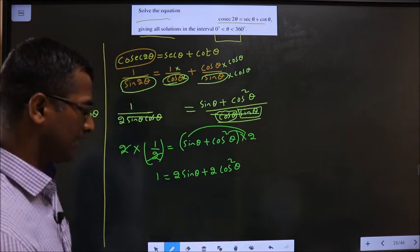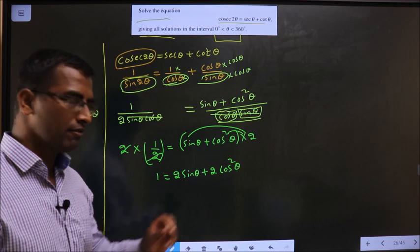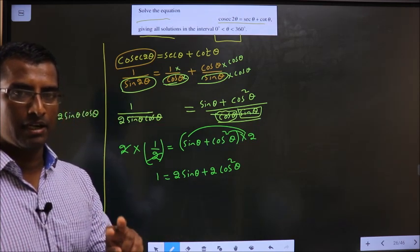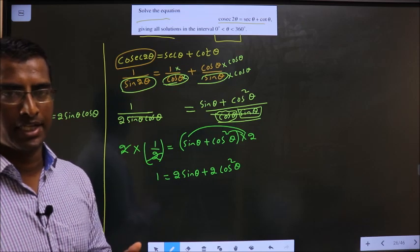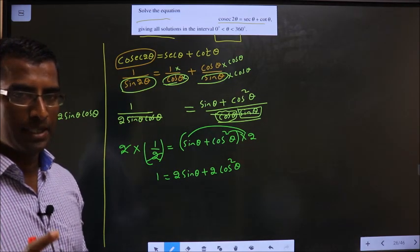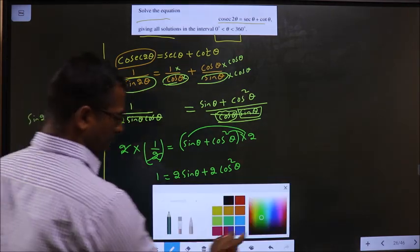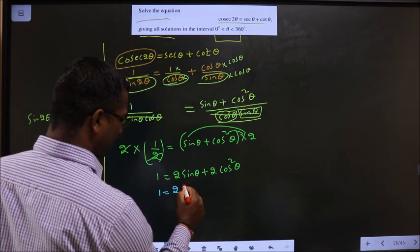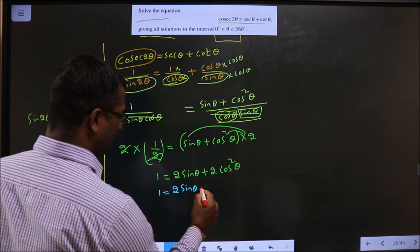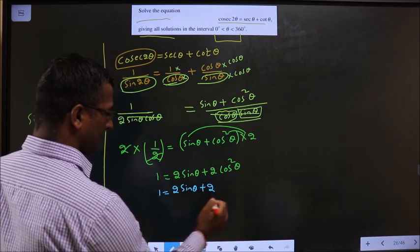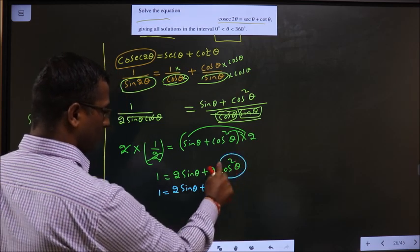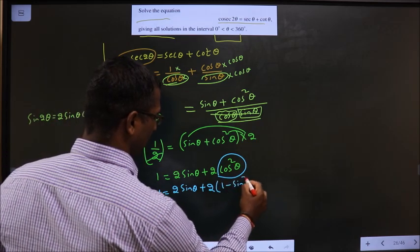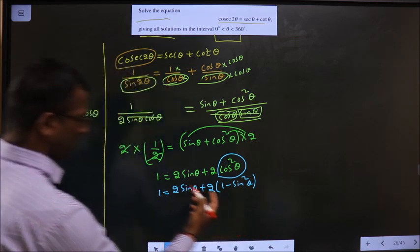In this equation, there are 2 trigonometric ratios present: sin and cos. I should make them into one. 1 equal to sin θ, I cannot rewrite any other way, so that will remain like that. But cos square θ I can write as 1 minus sin square θ.